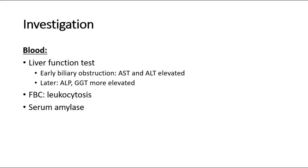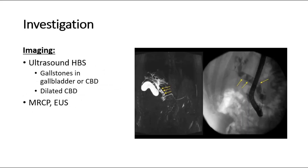For imaging, ultrasound of the hepatobiliary system is a good modality to investigate the cause. Expected findings include gallstones in the gallbladder, gallstones in the common bile duct, and a dilated common bile duct. Other imaging modalities include MRCP and endoscopic ultrasound scan.